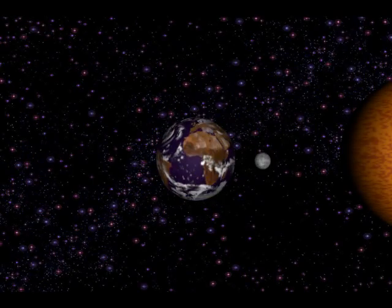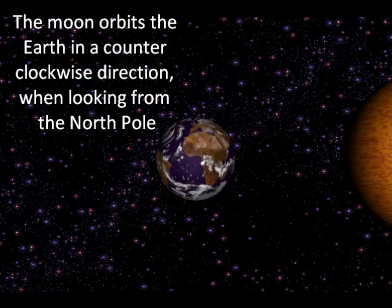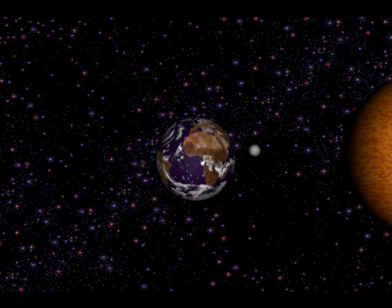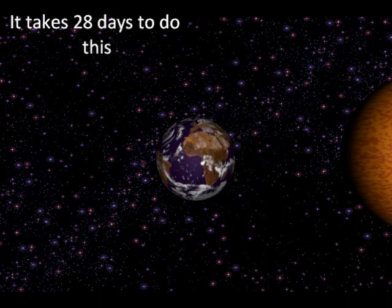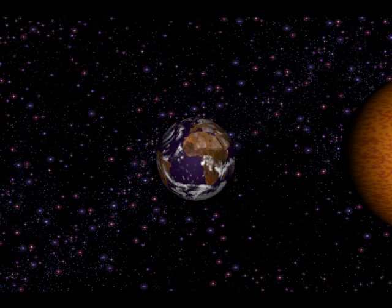The moon is also orbiting the Earth. It does this in a counterclockwise direction when looking from the north pole. It takes a total of 28 days for the moon to do one complete orbit around the Earth. It is important that we understand that the moon changes position each day, as this is what affects the times of high water.